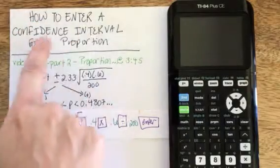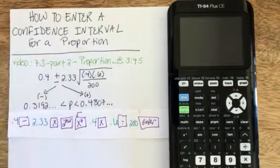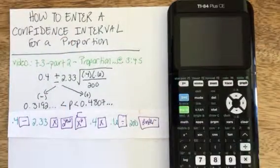Here is how to enter a confidence interval for a proportion, or perhaps you just call it a portion or a percentage, on the TI-84, which is similar to the TI-83.